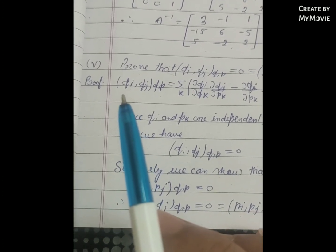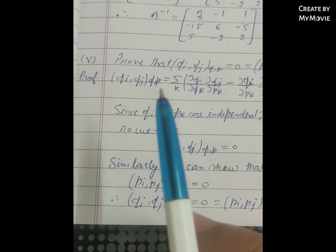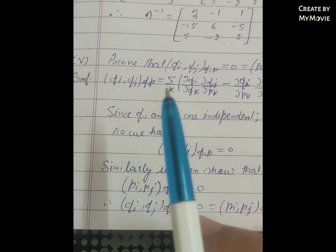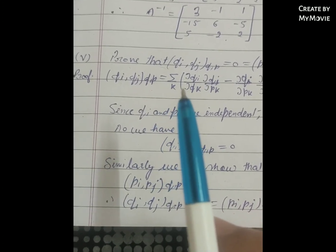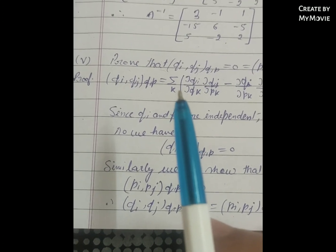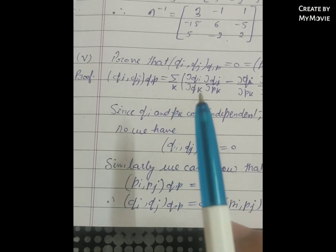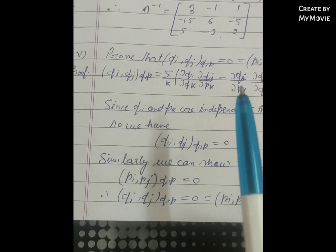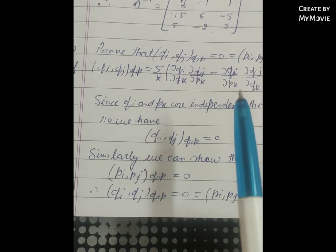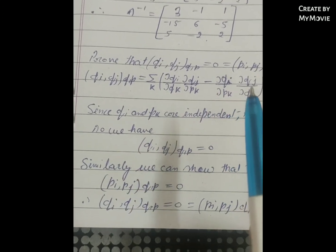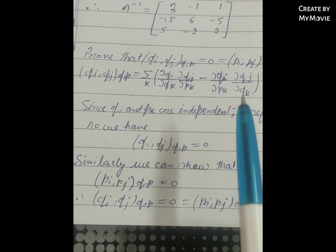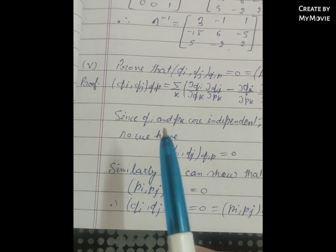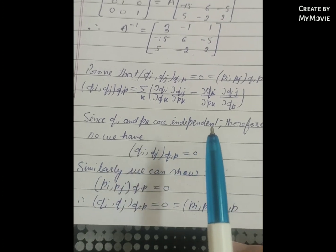Proof: The Poisson bracket (qi, qj)_{q,p} equals sigma over k of: (∂qi/∂qk · ∂qj/∂pk) minus (∂qi/∂pk · ∂qj/∂qk). Since qi and pk are independent, ∂qi/∂pk = 0.